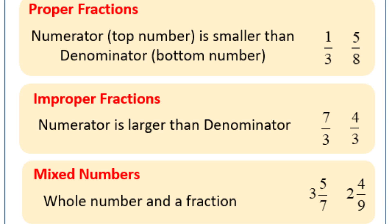In mixed fractions, there will be a whole number with a proper fraction. As you can see in the examples given, 3 and 5 by 7 — 3 is the whole number and 5 by 7 is the proper fraction. So together they are called a mixed fraction. In a mixed fraction, there will be a whole number along with a proper fraction.